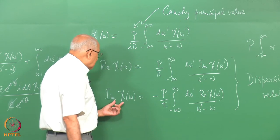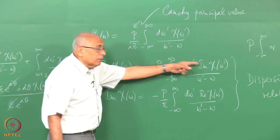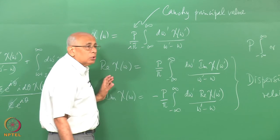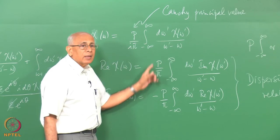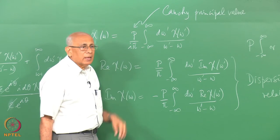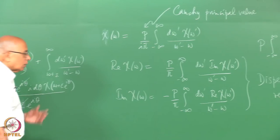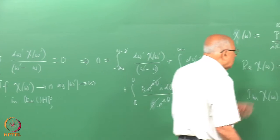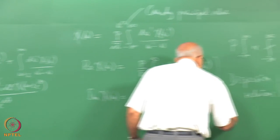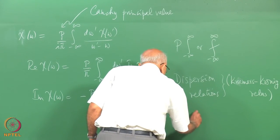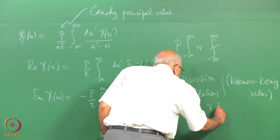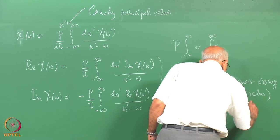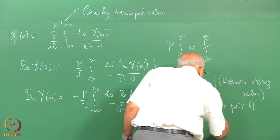The real part is a Hilbert transform of the imaginary part, and the imaginary part is a Hilbert transform of the real part — notice there is a minus sign. In principle if you substitute the imaginary chi from one relation into the other, you have one more integration to do, and you should get an identity — that intermediate integral should turn out to be a delta function. So real chi and imaginary chi form a pair of Hilbert transforms.